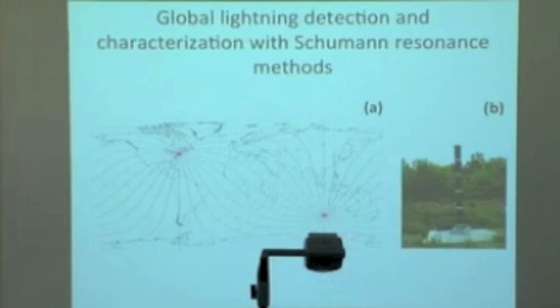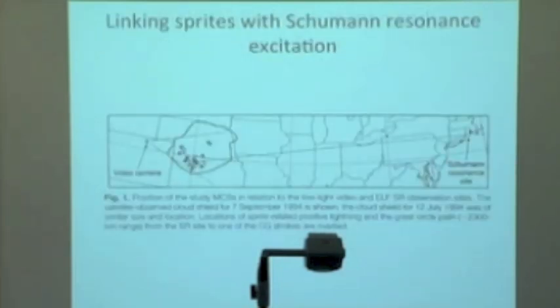We started measurements not at Millstone Hill. We had contact with Charles Polk, who was also in touch with Ted Madden and Balser and Wagner. He had a site in West Greenwich, Rhode Island, and said if you're interested in this phenomenon, you can come here and make measurements. We went to Rhode Island and we've been running since the early 90s. We built a very stout antenna out of big insulators from Boston Edison, about seven meters high. With that, we can see lightning worldwide.